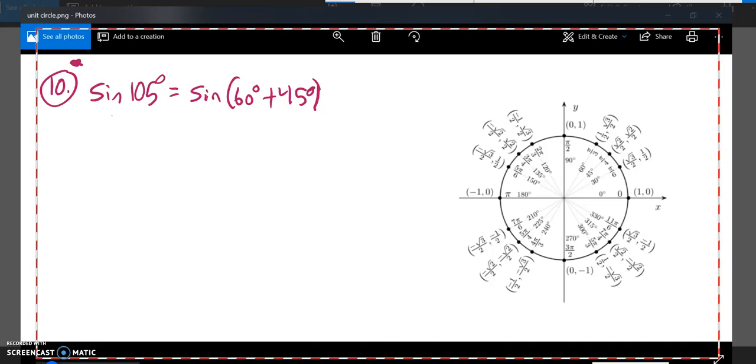This is Math 142 practice test for the final, problem number 10. We are supposed to find the exact value of sine of 105 degrees, and we're told how to break it up this way. I can use my reference page, or I already know that I can break this up using the addition relationship for sine.